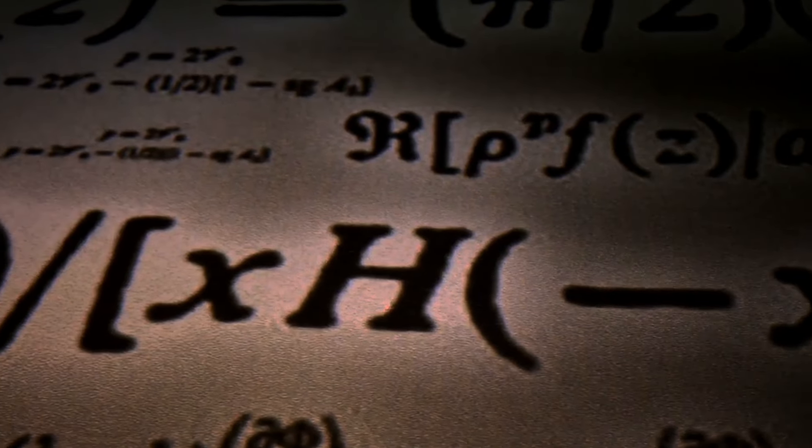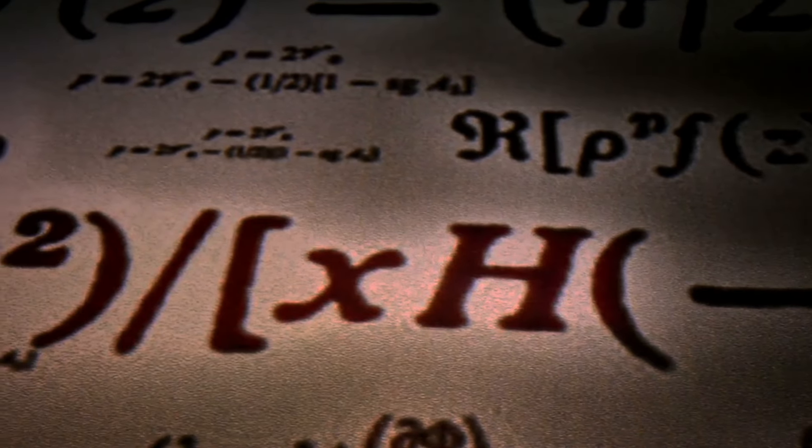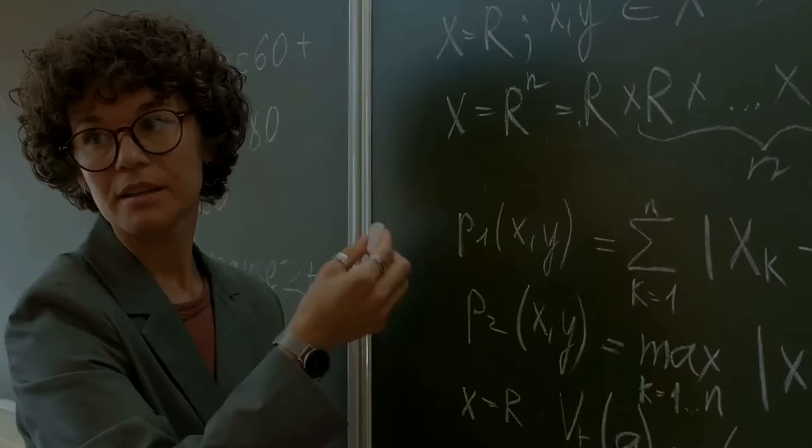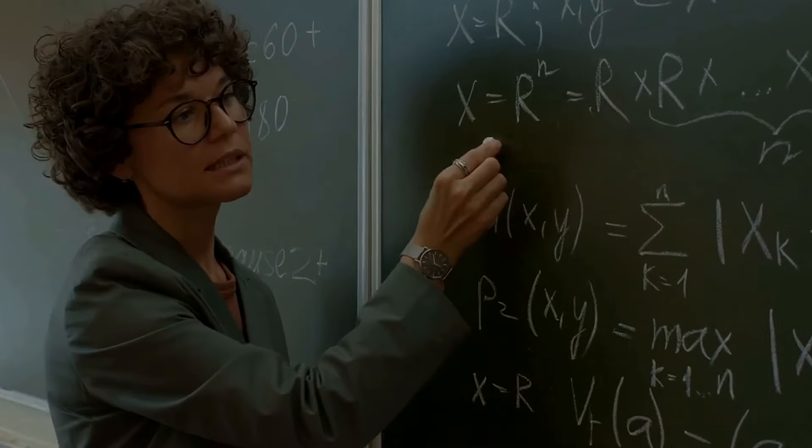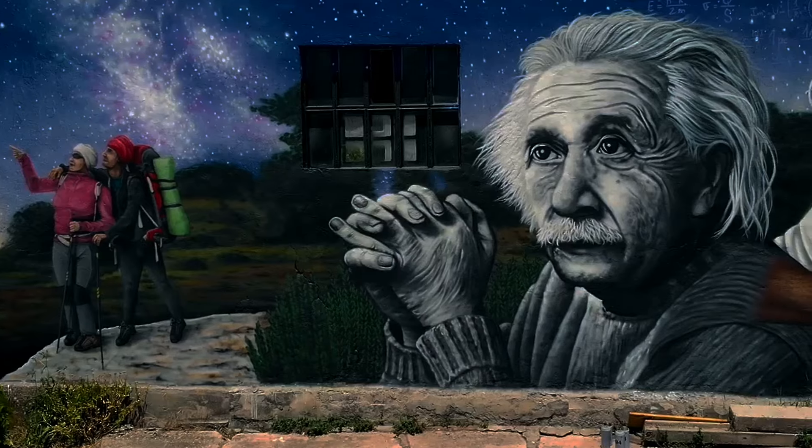Einstein incorrectly criticized Friedman's work in 1922, calling it incompatible with the field equations. Friedman correctly pointed out Einstein's error, which Einstein ignored until his friend, Yuri Krutkov, explained it to him, at which point he retracted his objections.